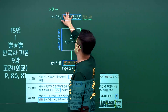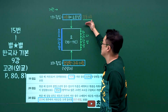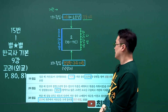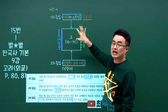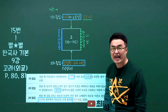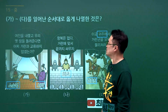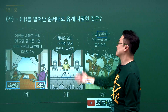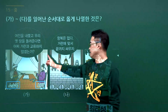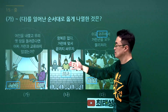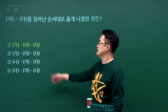고려의 거란 침입 문제입니다. 서희의 외교 담판, 그 다음 양규의 활약, 강감찬의 귀주대첩 순서로 1차, 2차, 3차 침입이 있었습니다. 가에서 나 사이에 사건 순서를 옳게 나열한 것인데 1차 서희, 3차 강감찬이 나왔으니 양규는 중간에 올 수밖에 없습니다. 정답은 가나다 순서로 1번입니다.